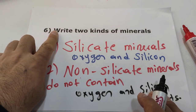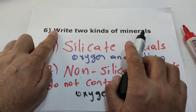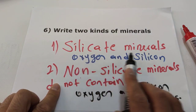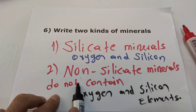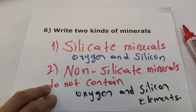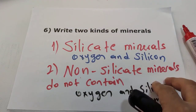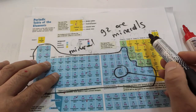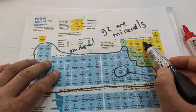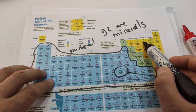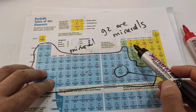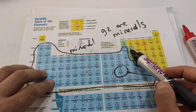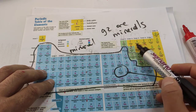Question six: write the two kinds of mineral. Silicate minerals — they contain oxygen and silicon elements. Non-silicate minerals — they do not contain oxygen and silicon elements. Let me show you on the periodic table: oxygen is element number 8, proton number 8; silicon is element number 14. If those two elements are found in a mineral, they are silicate minerals.